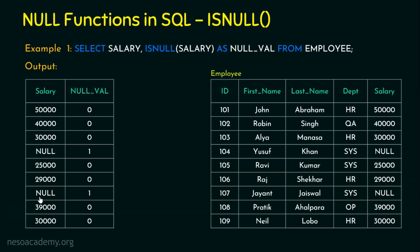Wherever we have a null value in the salary column of the table, the value returned is 1 because that is a null value. I hope example number 1 is clear — it is all about the ISNULL function.